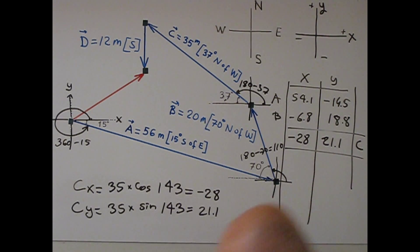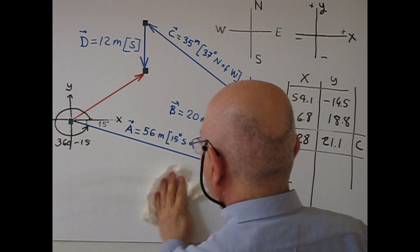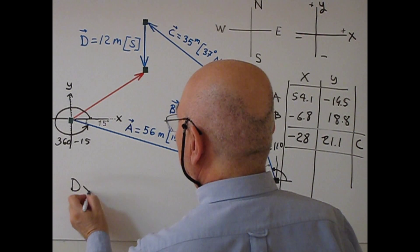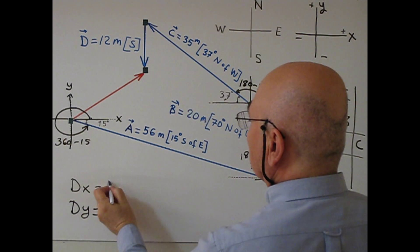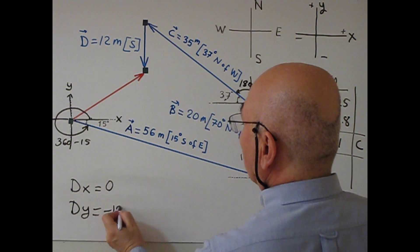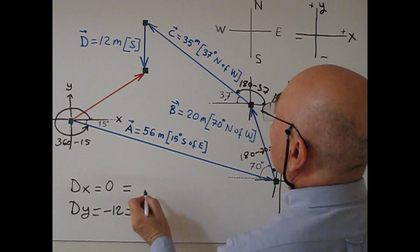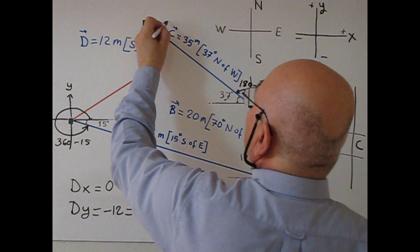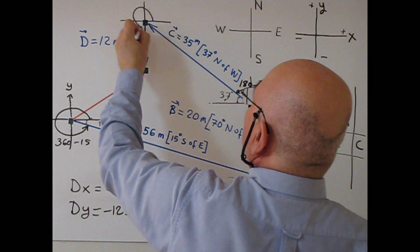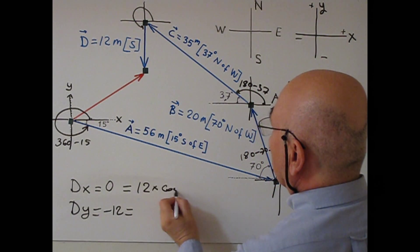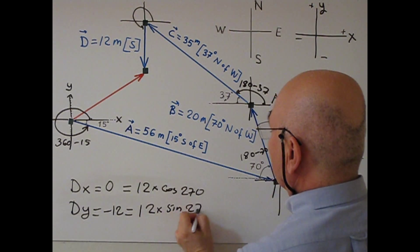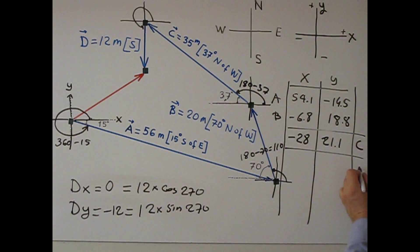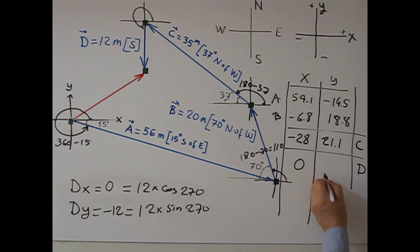For vector D, Dx equals 0 and Dy equals negative 12. We can confirm this as: 12 times cosine 270 for the x-component, and 12 times sine 270 for the y-component. So D is 0 and negative 12.